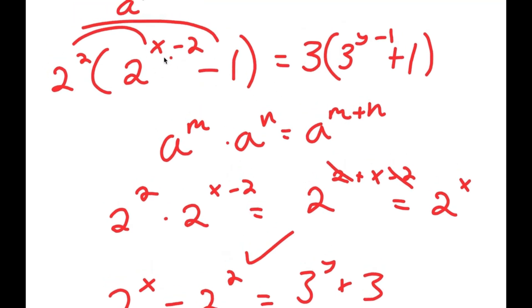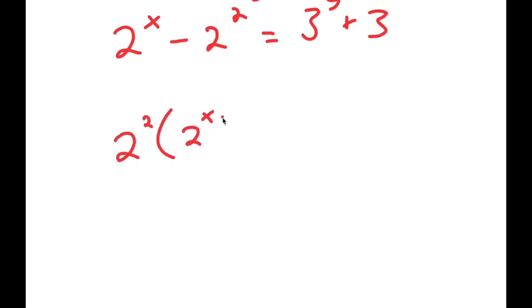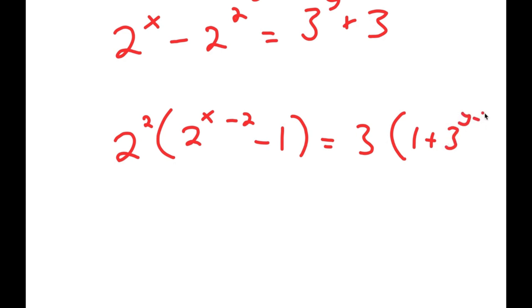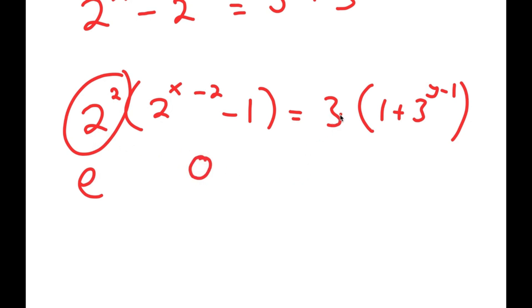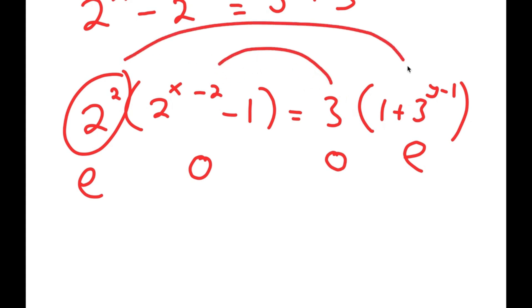Rewriting, I have 2 squared times the quantity 2 to the power of x minus 2 minus 1, equals 3 times the quantity 1 plus 3 to the power of y minus 1. Notice that 2 squared equals 4, which is even; 2 to the power of any number is even, and even minus 1 is odd, so the left side is an even number times an odd number. On the right, 3 is odd and 3 to the power of any number is odd, and odd plus 1 is even, so the right side is also an odd number times an even number. I'll set the odd parts equal to each other and the even parts equal to each other.